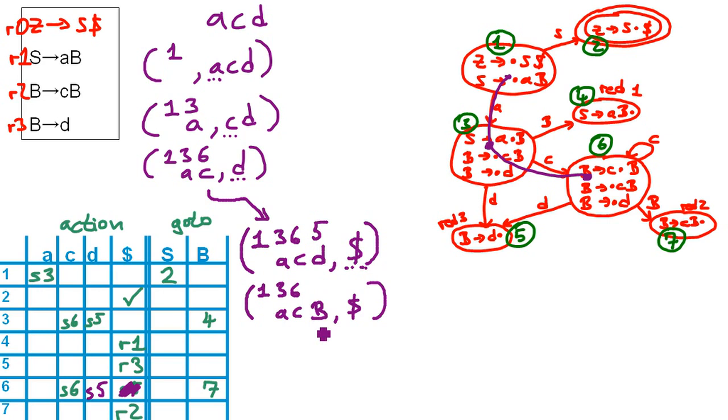State number six, and we have a B this time. Here we look at this part now. And we see a seven. So we know we have to write a seven. We're in state number seven now.